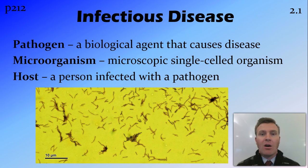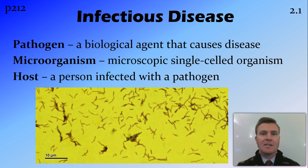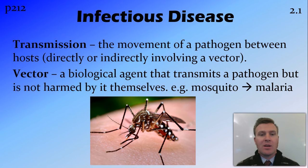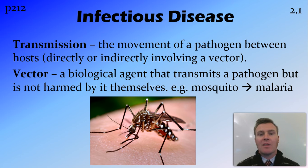The host is the person who is infected with the pathogen — the host has the pathogen inside them. Transmission is the movement of the pathogen from one host to another, and this can be directly, for example sneezing and somebody breathes it in, or it can be indirect, involving a vector. A vector is a biological agent that transmits the pathogen but is not harmed by it themselves.